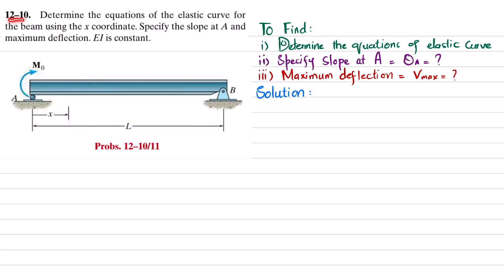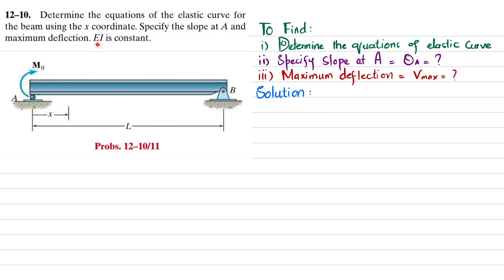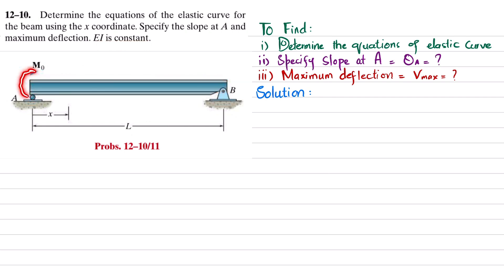Welcome back. Problem 12-10. The statement is: determine the equations of the elastic curve for the beam using coordinate x, specify the slope at A and maximum deflection. EI is constant. This is a beam where point A has a roller support, point B has a pin support, and there is an external moment M₀ applied at point A. The total length of the beam is L.